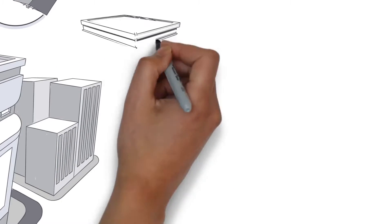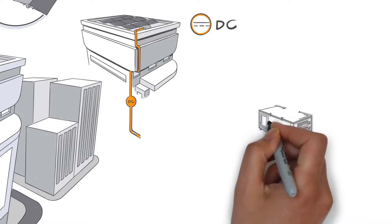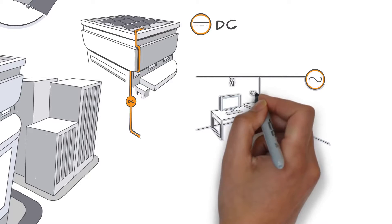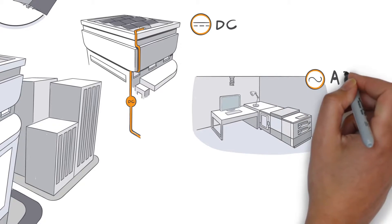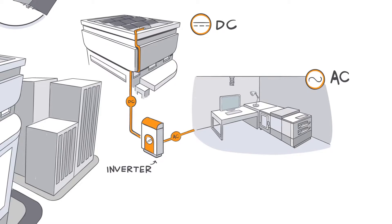Now, the electricity created by your panel is in direct current, or DC. But all the stuff you plug in—lights, copiers, computers—run off alternating current, or AC. So we need what's known as an inverter to convert the DC into AC.